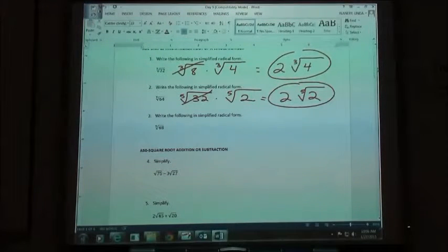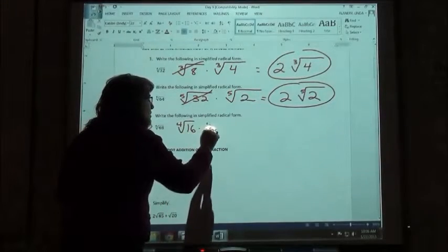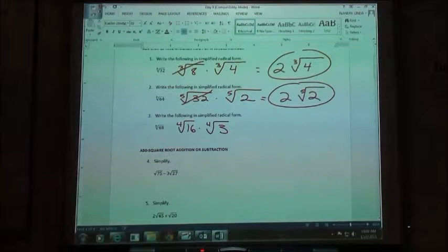So when I'm looking at simplifying a perfect fourth power, is it divisible by any of these numbers? In this case, 48 is divisible by 16. So I'm going to say it's the fourth root of 16 times the fourth root of 3, because 16 times 3 is 48.